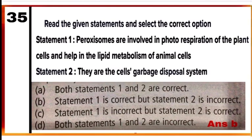Question 35: Read the given statements and select the correct option. Option B — statement 1 is correct and statement 2 is incorrect. Peroxisomes are found in photosynthetic cells and perform photorespiration; they also take part in lipid metabolism in animal cells. Peroxisomes are not the cell's garbage disposal system — rather, lysosomes are the cell's garbage disposal system. Mark B as the correct answer. That's all for today — thank you very much for staying with me. Subscribe to the channel for information about new videos.